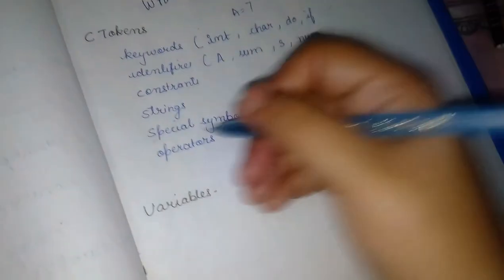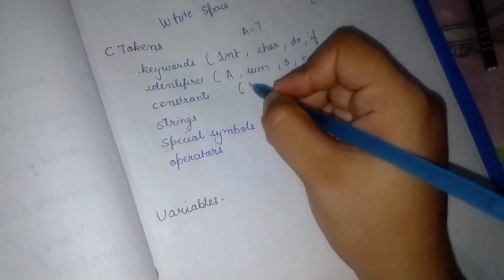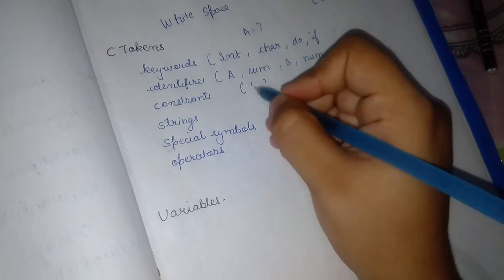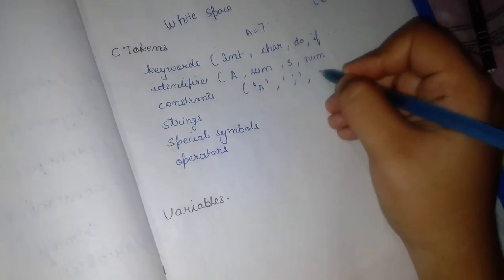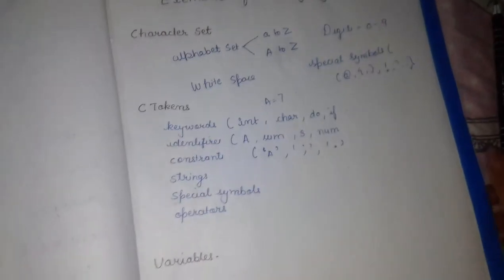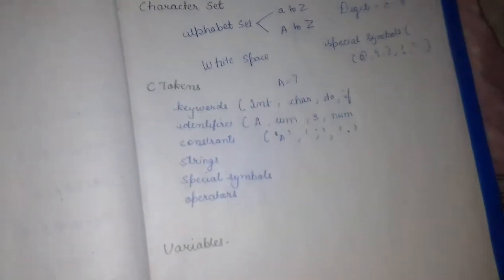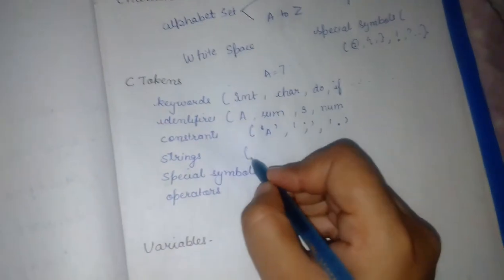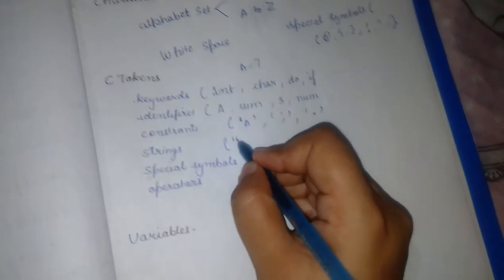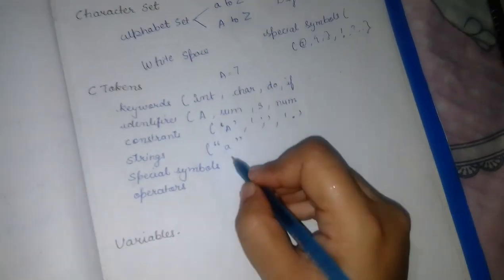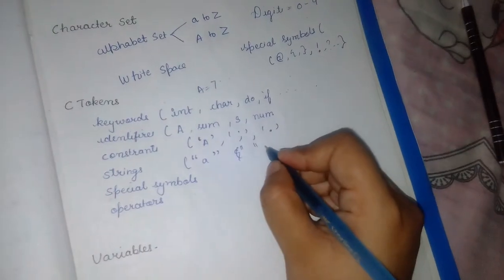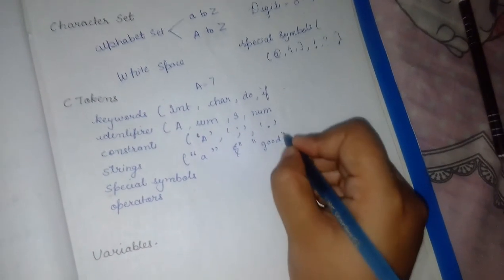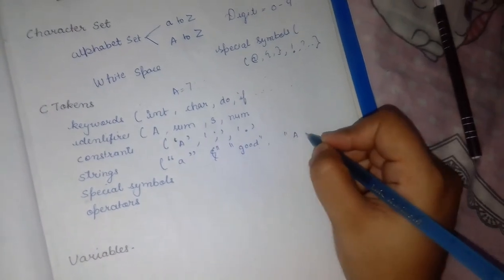Constants: anything that is written in single quotes is a constant. Here we can write any individual character set. Then we have strings: anything that is written in double quotes is called a string. It can be a single character, a word, or it can be a sentence.